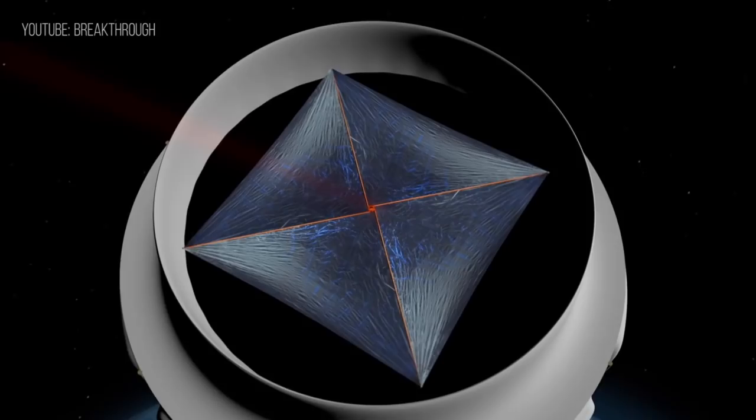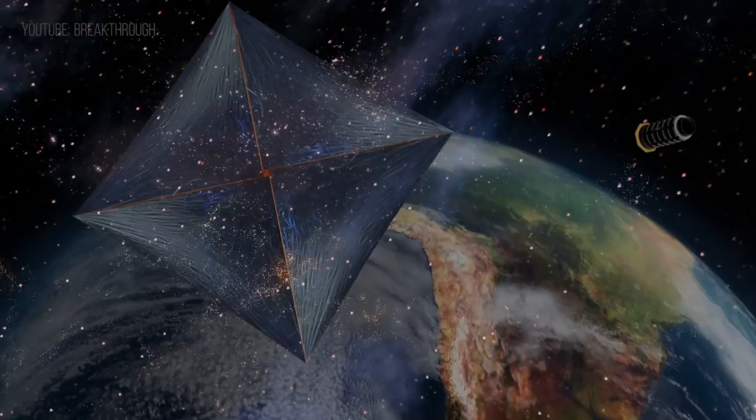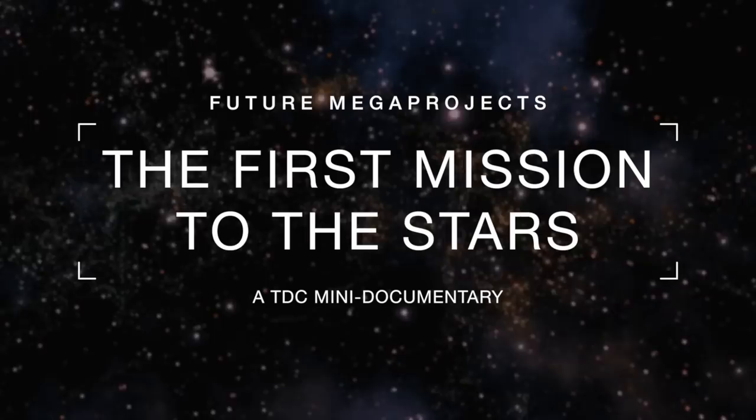Its mission? To give us our first view of a planet outside the solar system. Last year, researchers announced the discovery of Proxima b, a potentially Earth-like planet orbiting the red dwarf star Proxima Centauri, part of a triple-star system that's closest to our sun.